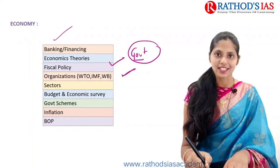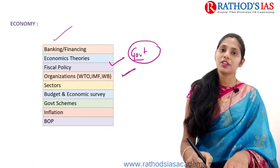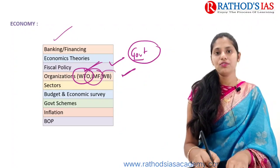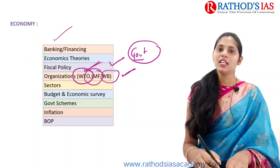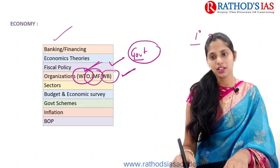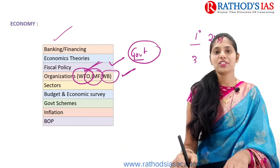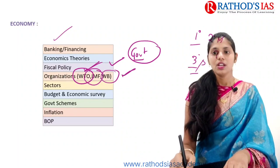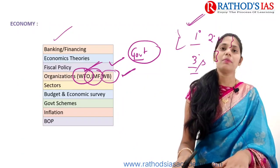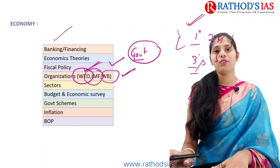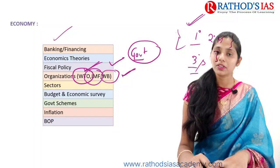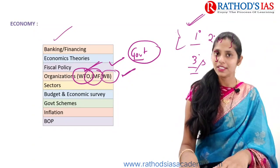You also need knowledge regarding organizations like the World Trade Organization, IMF, and World Bank. You have to know about economic sectors — primary sector like agriculture, secondary sector like manufacturing, and tertiary sector like services — and the developments and performance in these sectors. For example, the Purchasing Managers' Index and the Index of Industrial Production are indices you need to follow.